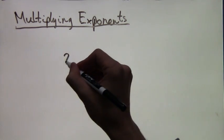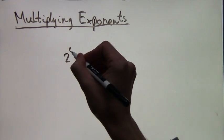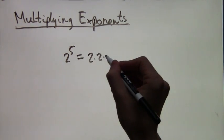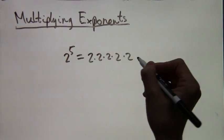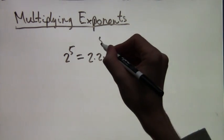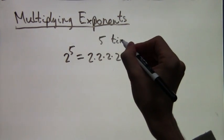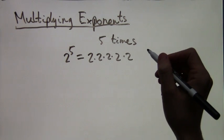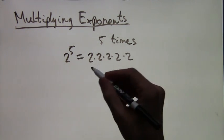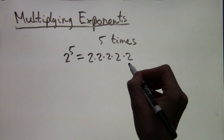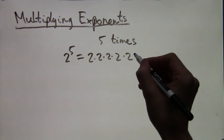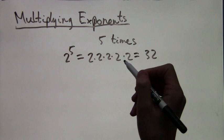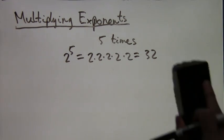First of all let's review what we mean by an exponent. For example if we have 2 to the fifth, what this means is 2 times 2 times 2 times 2 times 2 — a total of 5 twos. This is what we call an exponent with base 2, because we're taking 2 to some power. In this case it's equal to 32 if you multiply out all those twos.